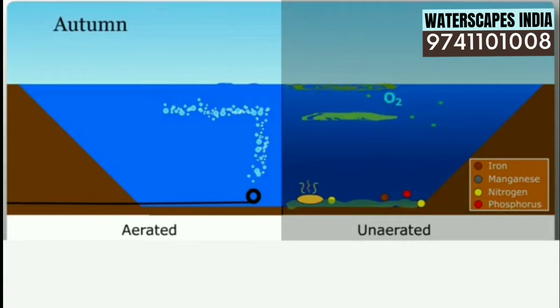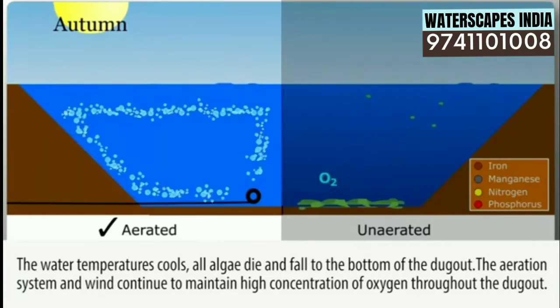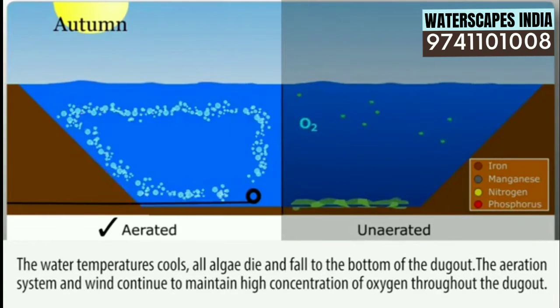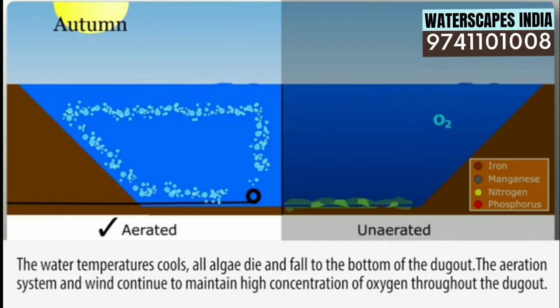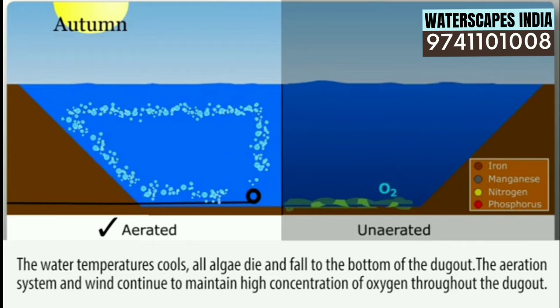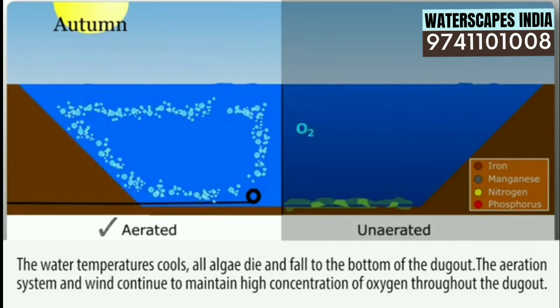Autumn. Aerated: the water temperature cools and algae die and fall to the bottom of the dugout. The aeration system and wind continue to maintain high concentrations of oxygen throughout the dugout.